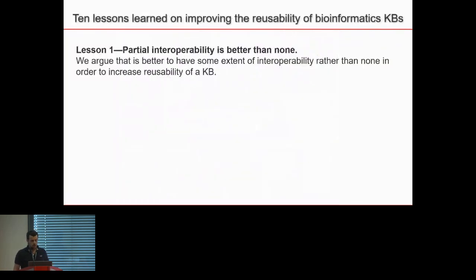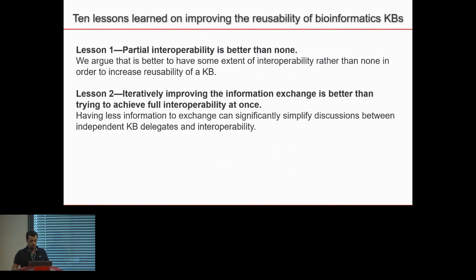Now for the lessons learned. The first lesson is that it's better to have some extent of interoperability rather than none. Achieving perfect, full interoperability is considerably hard — it may require resources, human expertise, or skills that are lacking. Instead of trying to do everything at once, the second lesson is that it's better to improve over time — iteratively improving information exchange is better than aiming for full interoperability immediately.